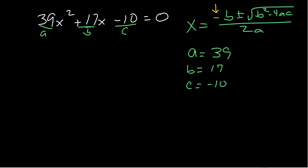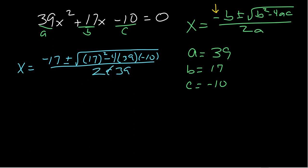And then it's just a matter of substituting and simplifying from that point. So x equals the opposite of b, which will be a negative 17, plus or minus square root of 17 squared minus 4 times 39 times negative 10, all over 2 times a, which is 39.